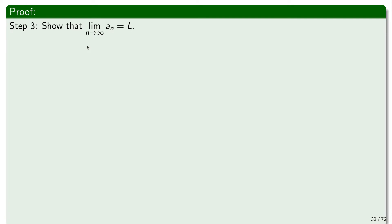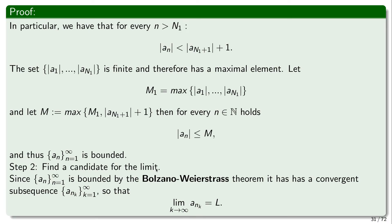Since a_n is a bounded sequence of real numbers, by the Bolzano-Weierstrass theorem it has a convergent subsequence. Let us denote it by a_{n_k}, and this subsequence converges to the limit L. Now we actually have a candidate for the limit. In our final step of the proof, we're going to show that the entire sequence actually converges to this limit of the subsequence — the limit L chosen from any convergent subsequence guaranteed by Bolzano-Weierstrass.